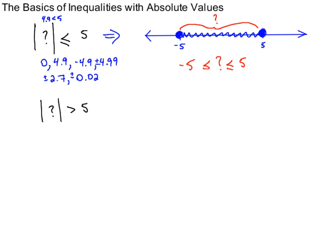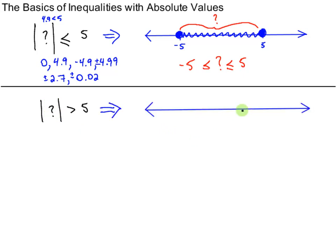Now, if the absolute value of something is bigger than 5, then clearly numbers bigger than 5 have an absolute value bigger than 5 — like 6, 7, 5.2 — but the number 5 is not, because the absolute value of 5 equals 5, not greater than 5. But there are also other numbers: numbers less than negative 5, to the left of negative 5. Negative 6, when you take the absolute value, gives you positive 6, which is greater than 5.